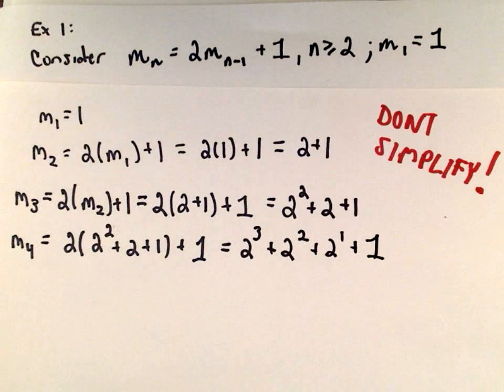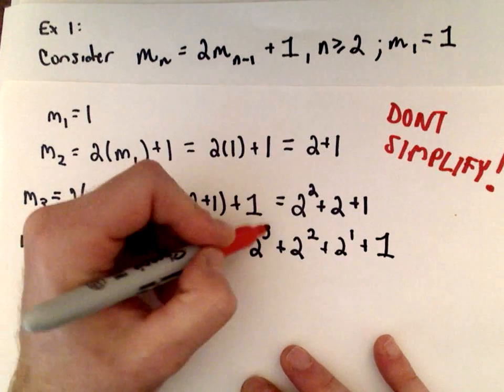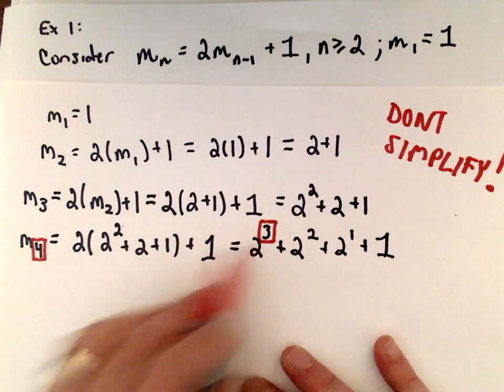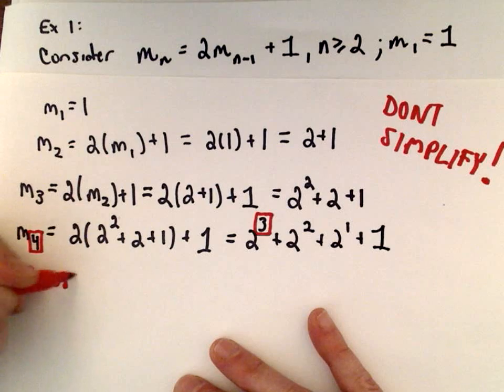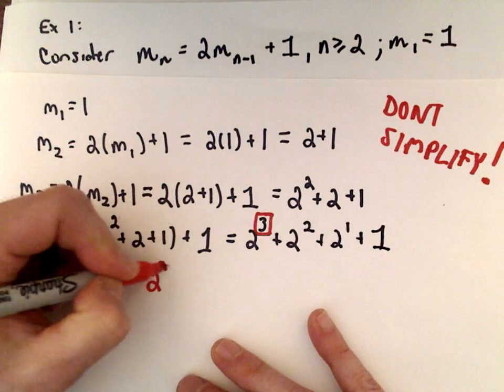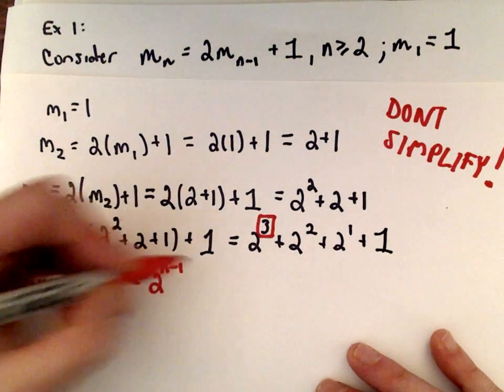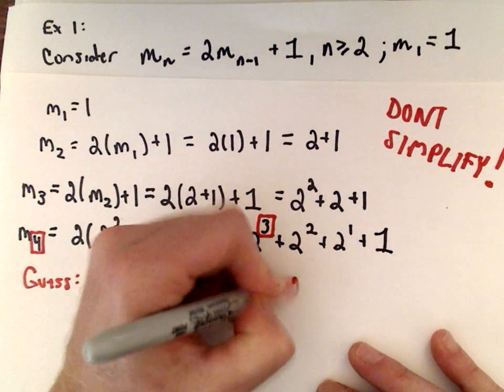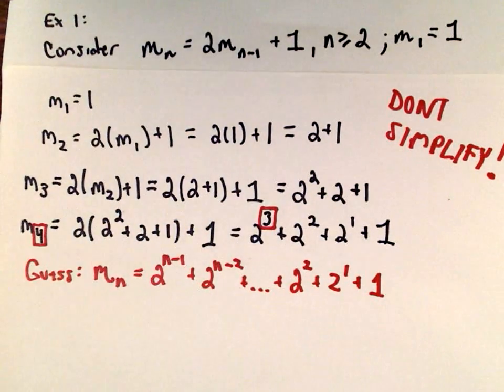I think you can probably guess the pattern by now. It looks like whatever the subscript is, we end up getting powers of 2. We're adding up powers of 2 that stop at 1 less. My guess is that m sub n should equal 2 raised to the n minus 1, plus 2 raised to the n minus 2, plus dot dot dot, eventually down to 2 squared, 2 to the first, plus 1.